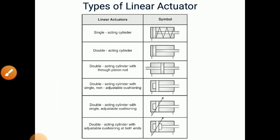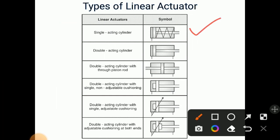So there are different types of linear actuators available. First one is single acting cylinder, it moves in one direction only and it gets retracted back with the help of these springs. Second one is double acting cylinder, it can move in both the direction. Next is double acting cylinder with through piston rod. Next is double acting cylinder with single non-adjustable cushioning. In the next, adjustable cushioning is there. And in the last, adjustable cushioning at both the ends. So like this there are different types of linear actuators available.